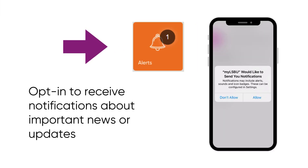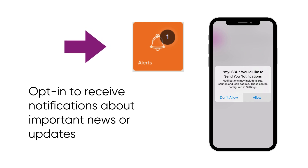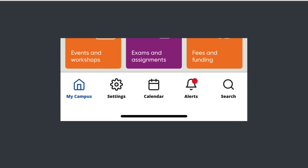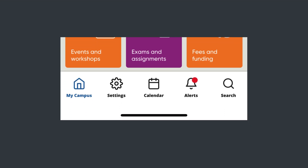Opt in to receive notifications. Occasionally, we will send alerts or notifications from the university about important news or updates. Notifications can be viewed on the alerts tile, as well as from the bottom navigation bar on the My LSBU app. We won't be sending them constantly, and you can always choose to opt out from receiving them in the future. This option is available via your settings.